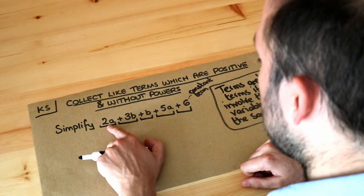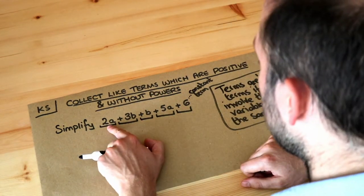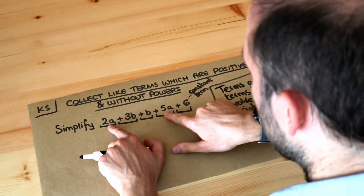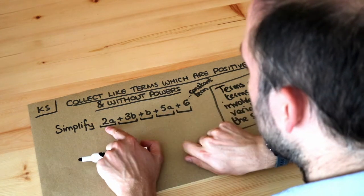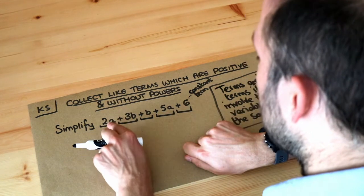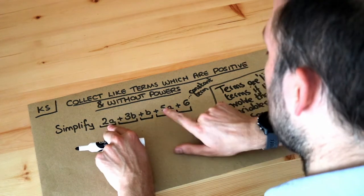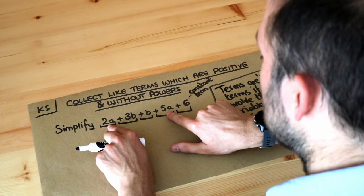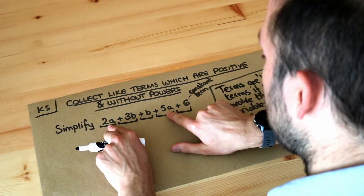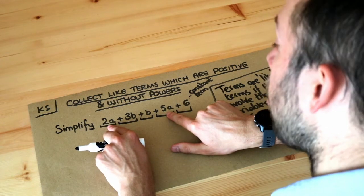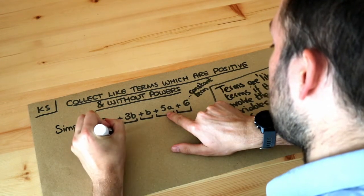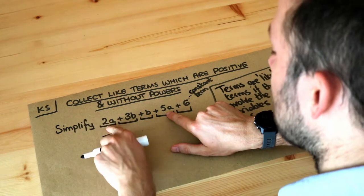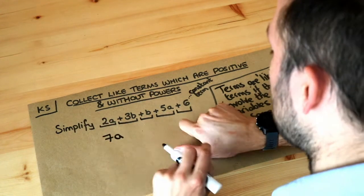The 2a and the 5a are like terms because they both involve a. We've got two lots of a and we add five lots of a, so in total we have seven lots of a — we're just adding the two and the five together to get 7a.